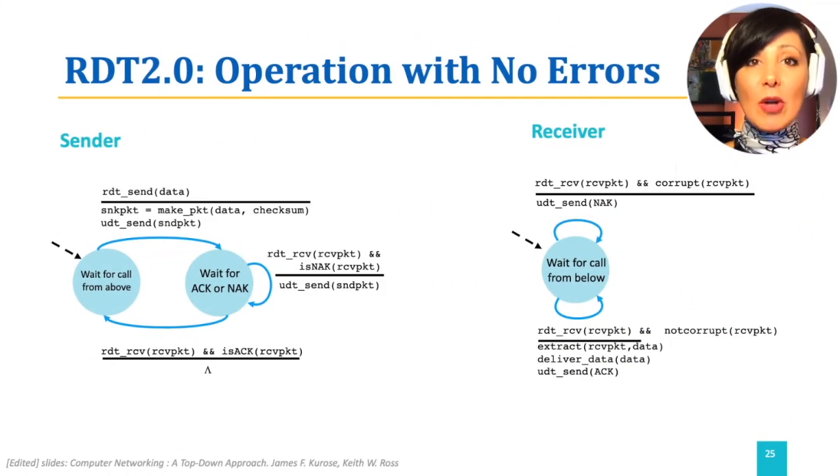Let's see RDT 2.0 in action in case of transmission that does not encounter a problem in the channel. The process starts with data arriving from the higher layer. The packet is made and sent, and the state has changed so that the sender is now waiting for ACK or NAK from the receiver.